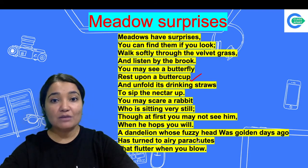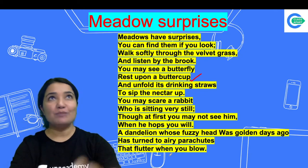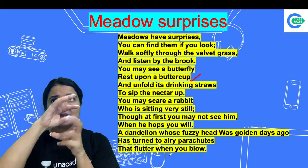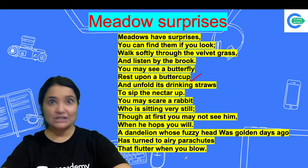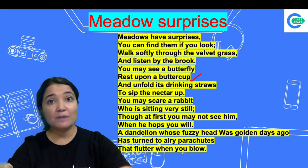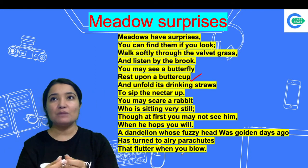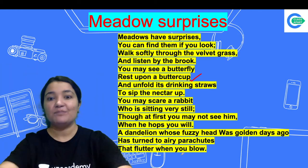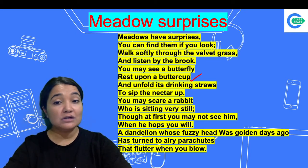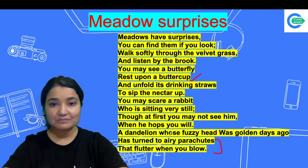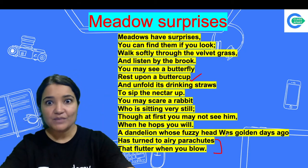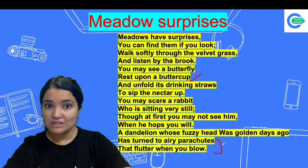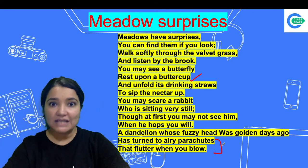The flower has turned into airy parachutes that flutter when you blow. This refers to a dandelion. The dandelion flower is yellowish, but when it grows and ages, it becomes a fluffy seed head. You just blow it and the seeds float away — that is compared to an airy parachute. A dandelion's fuzzy head was golden days ago. Flutter means to go up and drift.